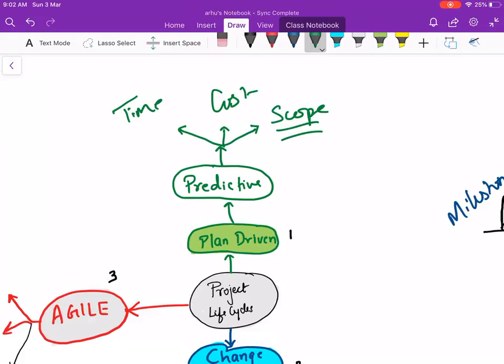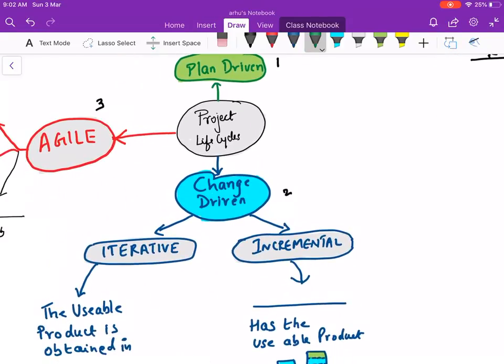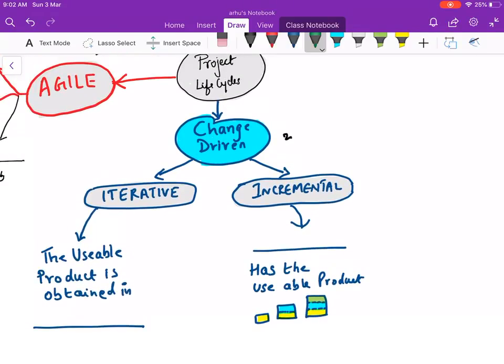Now there is another thing that we need to understand. Based on the delivery the change driven life cycle has got two things: one is iterative, one is incremental. Many times people get confused on what is iterative what is incremental. In an iterative life cycle say you have got one, two, three phases. The final usable product is obtained at the end of all the three phases.